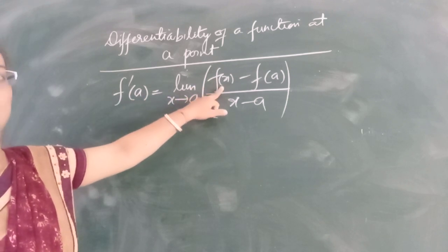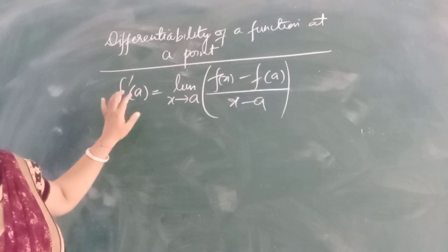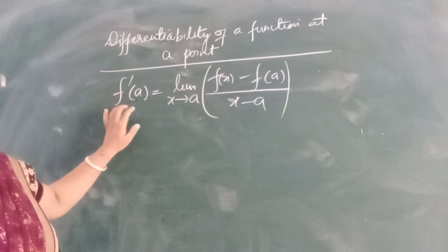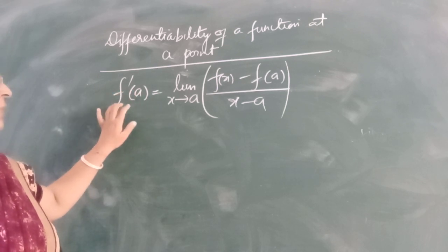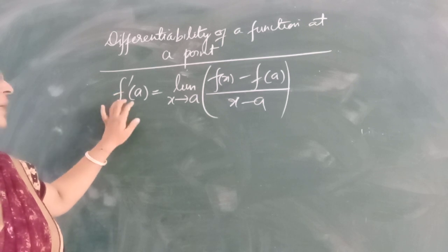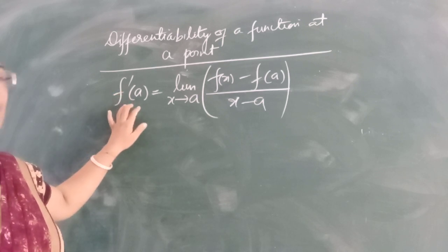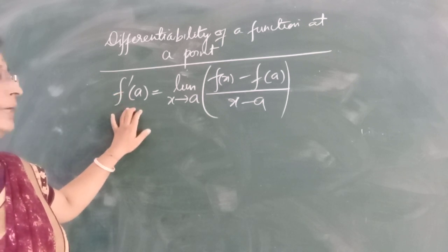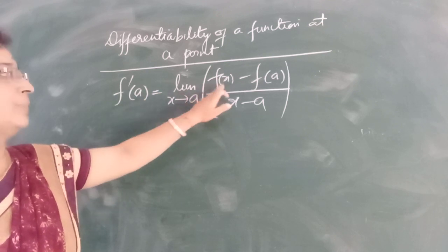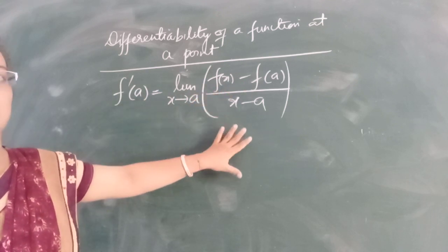We calculate the limit as x goes to a of [f(x) minus f(a)] upon [x minus a].